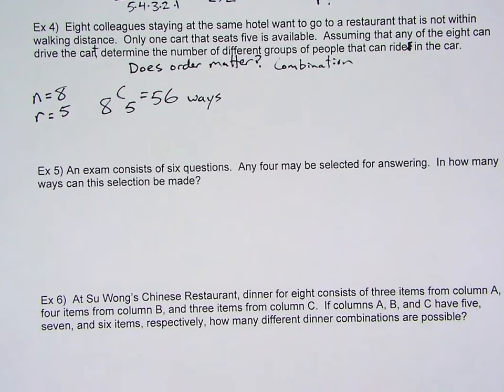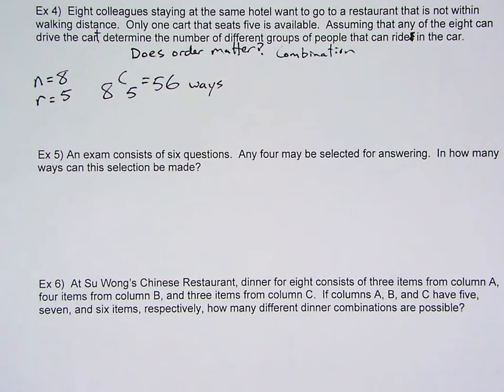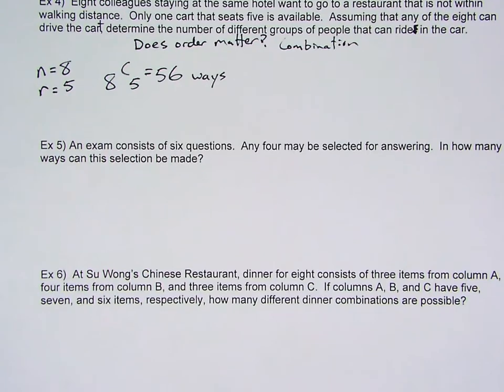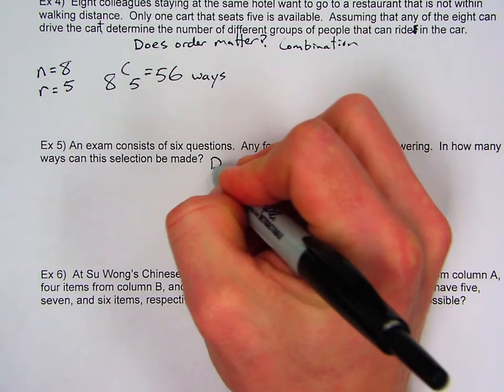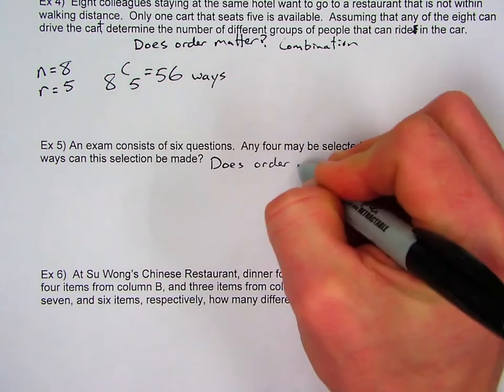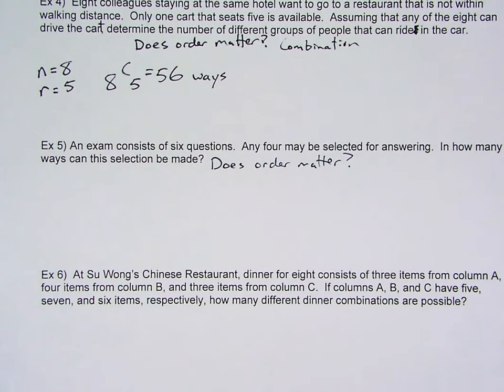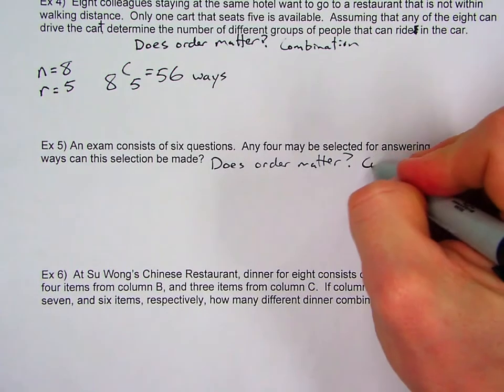Alright. Our next question. It says, an exam consists of six questions. Any four may be selected for answering. In how many ways can this selection be made? So what question do you ask yourself? Does order matter? Well, if we assume that all the questions are worth the same amount of points, does it matter if you answer question one first and then question two? No. Because they're all going to get answered. They're all going to be scored equally. So this tells me that it has to be a combination.